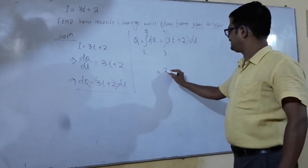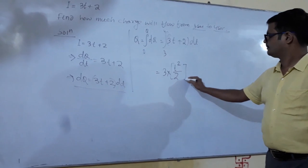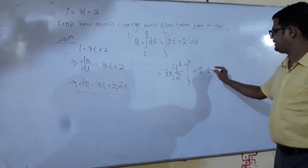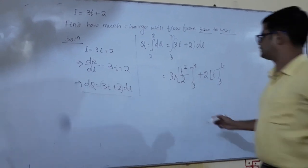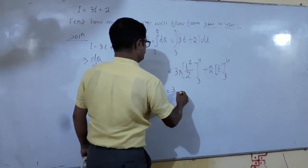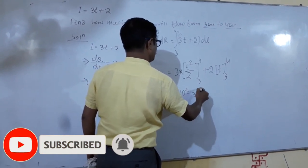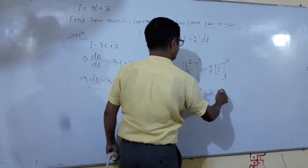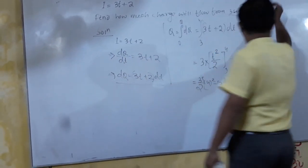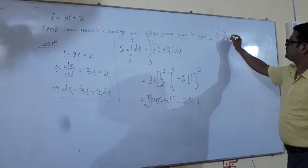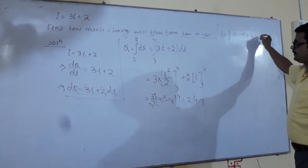Writing out the integration: q equals 3 into t-squared by 2 evaluated from 3 to 4, plus 2 into t evaluated from 3 to 4. This becomes 3 by 2 into (4-squared minus 3-squared) plus 2 into (4 minus 3).